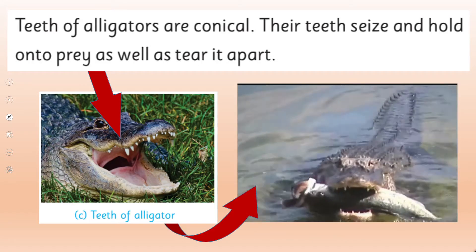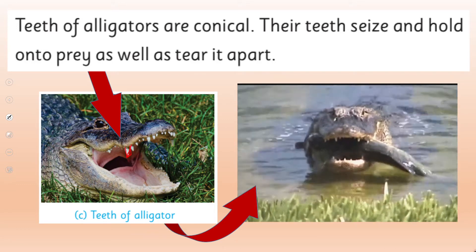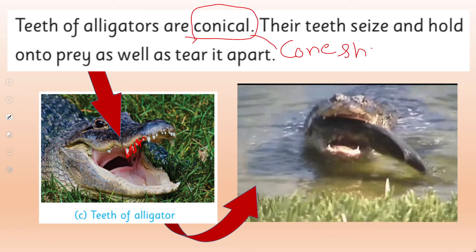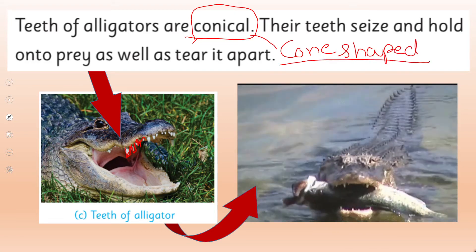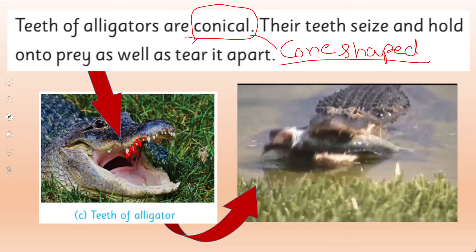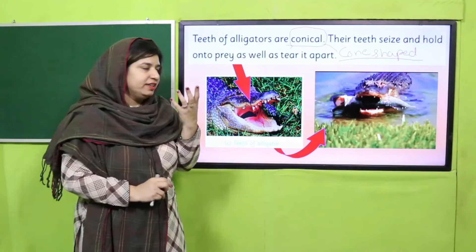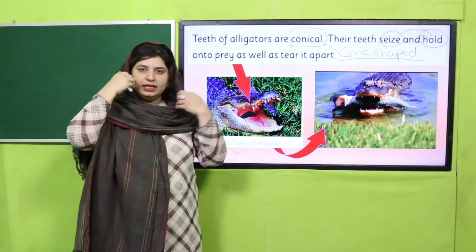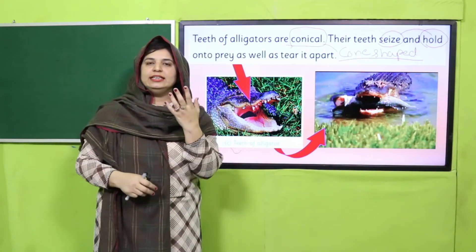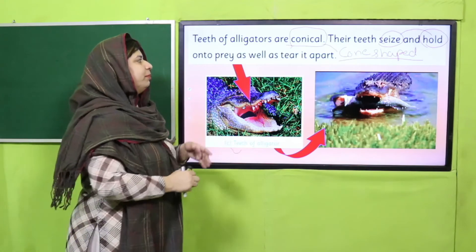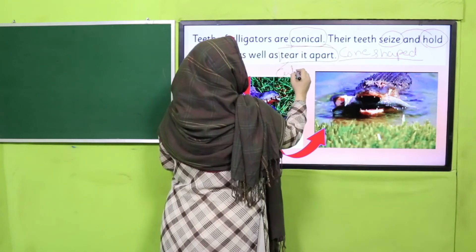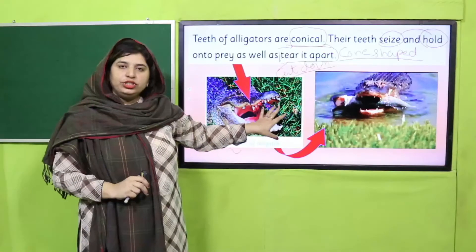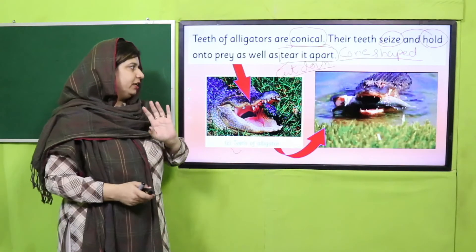Next are the teeth of alligators. What kind of shape are their teeth? Conical — cone-shaped teeth are present inside alligators. Their teeth help them to hold and seize the prey, to capture it and hold it, and then tear it apart — cut it down into smaller pieces. Alligators have conical, cone-shaped teeth that help them hold the prey and tear it apart.